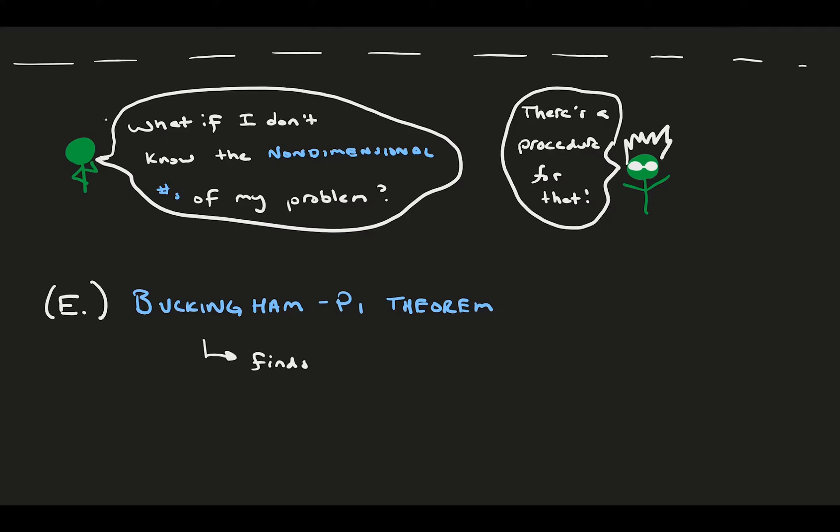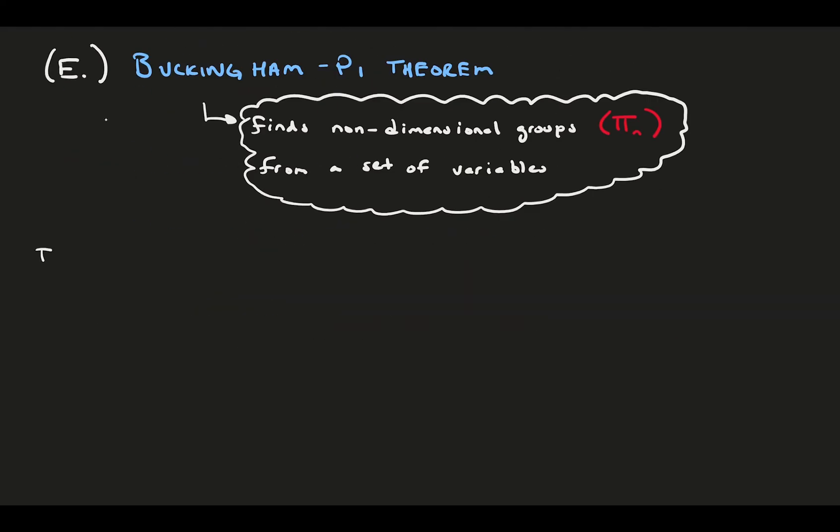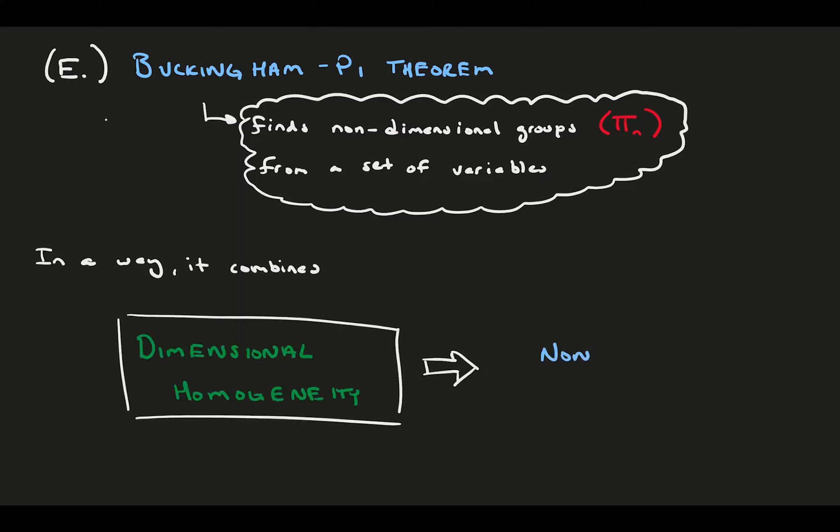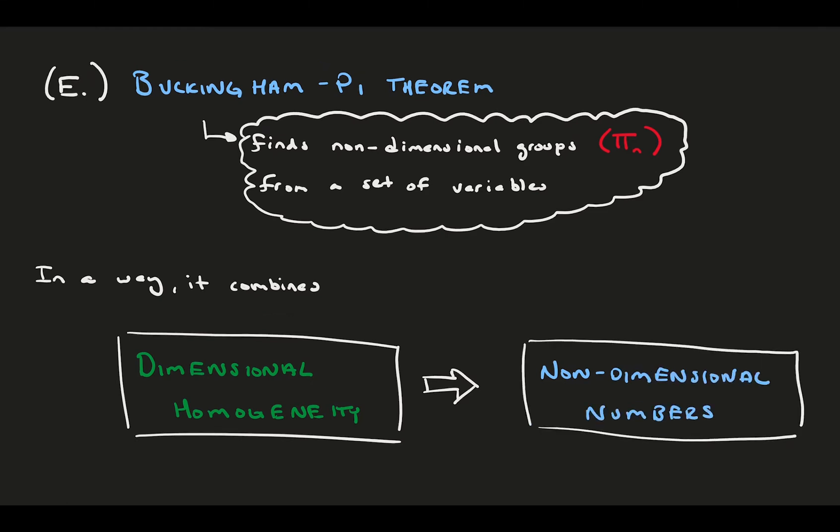It finds non-dimensional numbers, called pi groups, from a set of variables with dimensions. As you'll see, it combines the strategy of dimensional homogeneity, from a few videos ago, to find non-dimensional numbers we covered in the last video. First, we will define all the steps of the theorem, and then go through some examples to try it out.